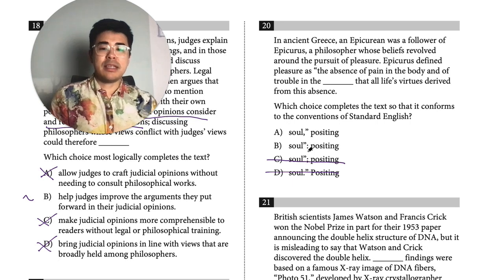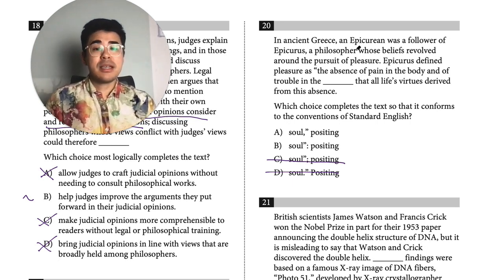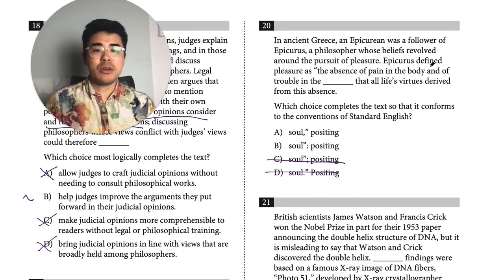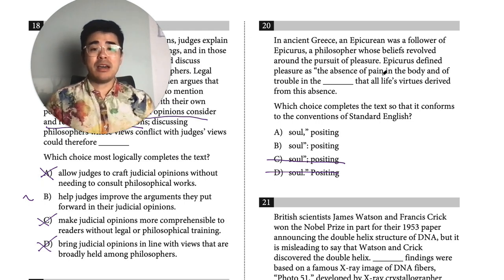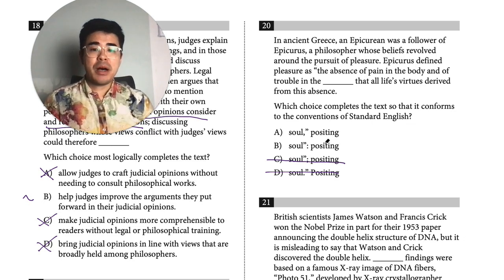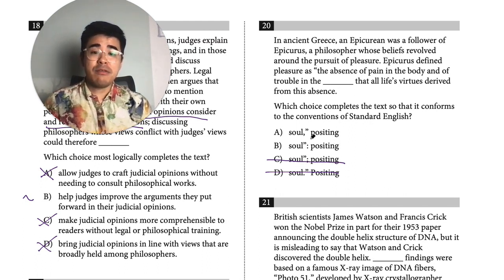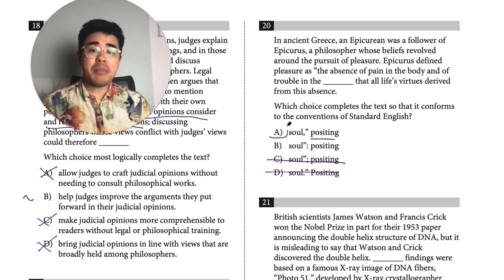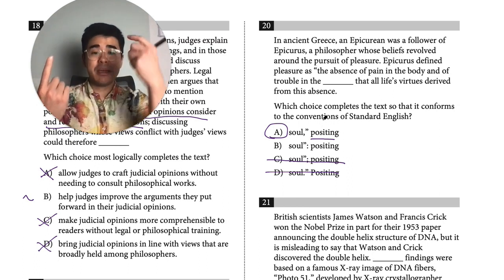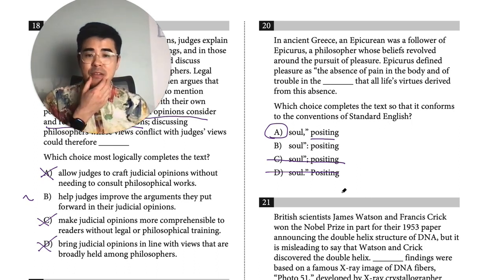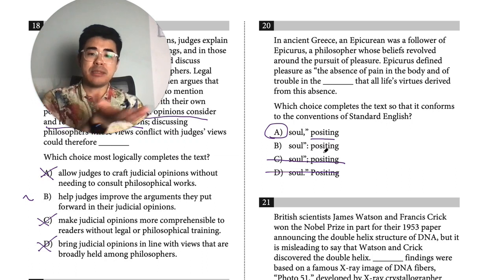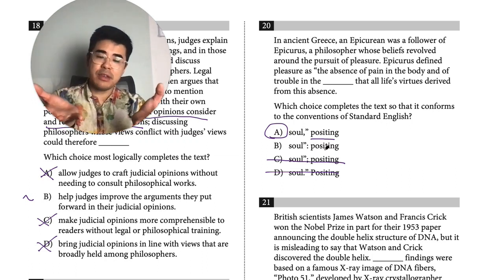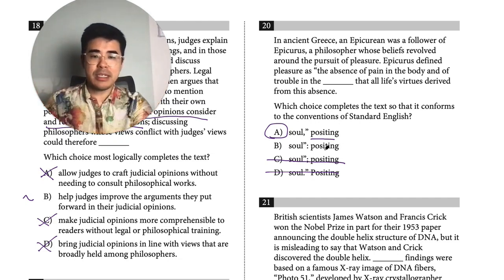In ancient Greece, an Epicurean was a follower of Epicurus, a philosopher whose beliefs revolved around the pursuit of pleasure. Epicurus defined pleasure as the absence of pain in the body and of trouble in the soul, positing that all of life's virtue is derived from this absence. We have a dependent clause followed by a participial phrase. A is better than B because it's almost as if he's doing those two actions simultaneously — in his definition, he posits these ideas. B would be setting up the opinion and then explaining it in the next half. Definitely A.